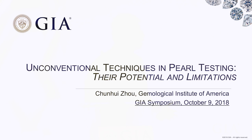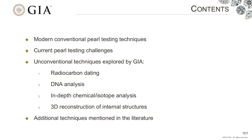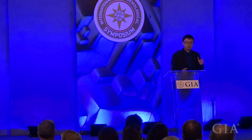Today I'm going to talk about some unconventional techniques for pearl testing, and more specifically, I'd like to focus on their potential and the limitations from a gemological point of view. The four unconventional techniques I'm going to cover today are radiocarbon dating, DNA analysis, in-depth chemical and isotope analysis, and the 3D reconstruction of the internal structures.